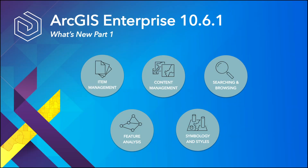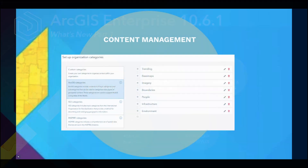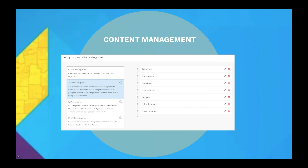Next up is content categories. Categories help to organize the data in your portal based on themes that are pertinent to your organization. Categories can be completely custom, or you can use existing ISO, Inspire, or ArcGIS structures. A few ideas for custom categories could be characteristics such as field data, real-time, or suitable for analysis, or content such as oceans, rivers, or lakes.